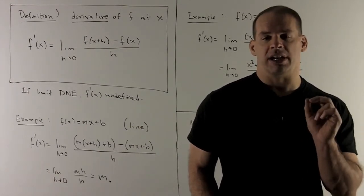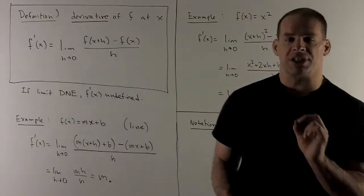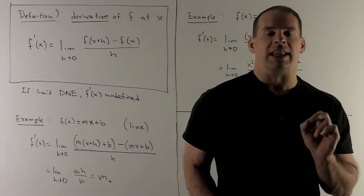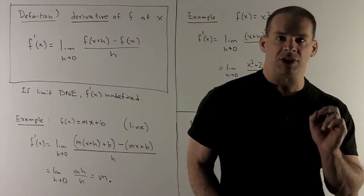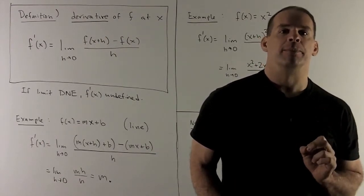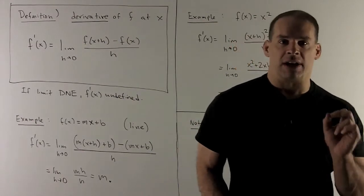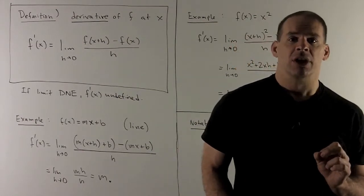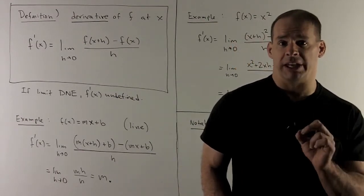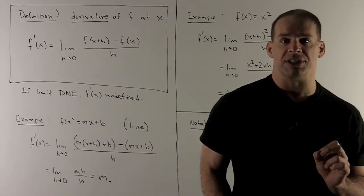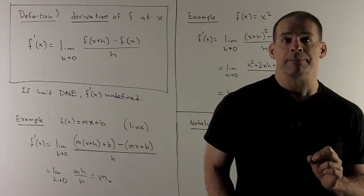Let's take a look at an example. The first example is going to be a straight line: f(x) = mx + b. So what are we going to do? First, we're going to calculate f(x+h), which is m(x+h) + b — remember to keep your parentheses there. And f(x) is just mx + b.